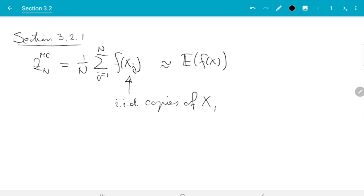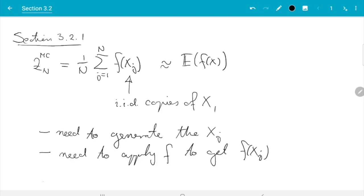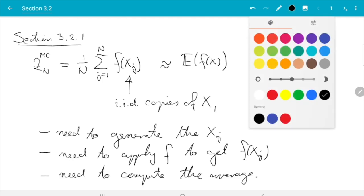The next step is normally trivial. We need to apply f to get f(X_J), and finally we need to compute the average, the 1 over N sum J from 1 to N.